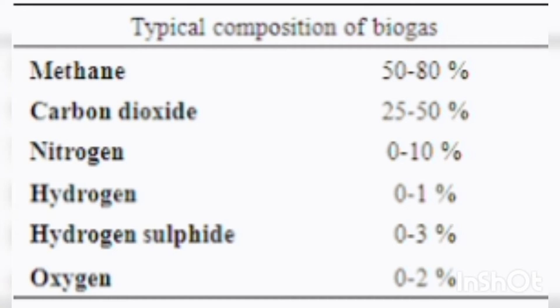Nitrogen, H2: 0 to 3%, hydrogen sulfide H2S, 0% oxygen — these are the bio-gas components.